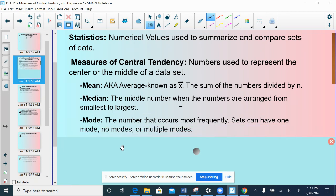Lastly for our measures of central tendency, we have the mode. The mode is the number that occurs most frequently. Sets may have one mode, no mode, or multiple modes.